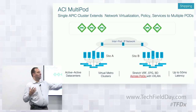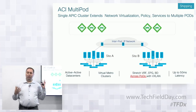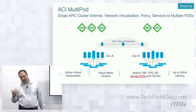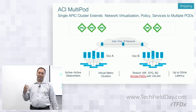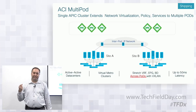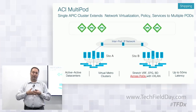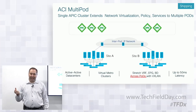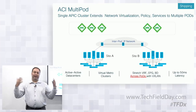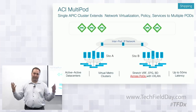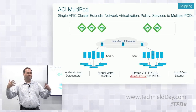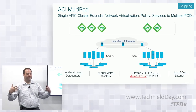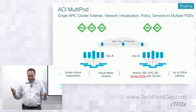The important thing here is that you have a single APIC cluster. Because it's a single APIC cluster and we use a sharded database across the APICs, we had a 50 millisecond latency round-trip timer requirement, because we expected to split the APICs between sites. So we want to keep that sharded database in sync.